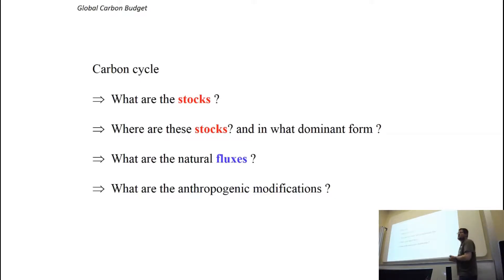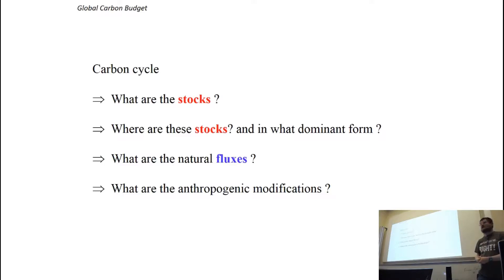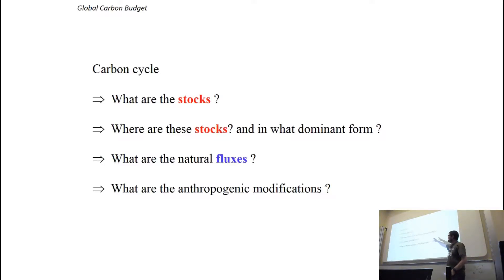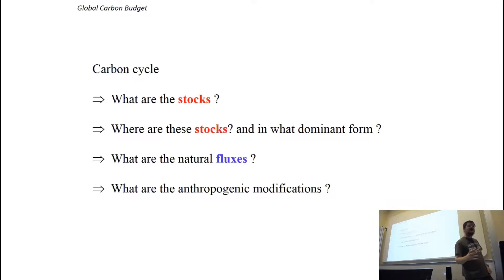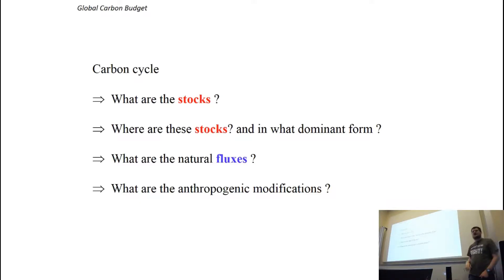We're going to basically go through and describe what are the components of the carbon cycle in the terrestrial system, what are the fluxes between them, how have we changed these fluxes, and how is this seen in the record of atmospheric carbon dioxide?